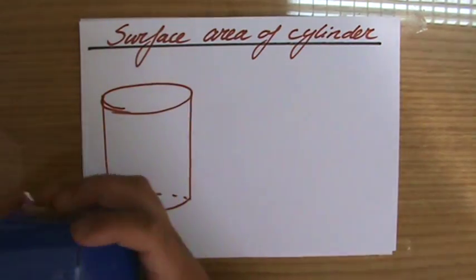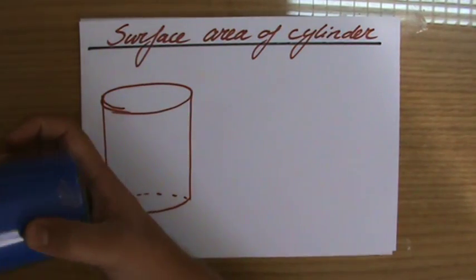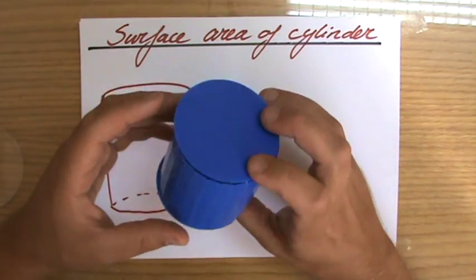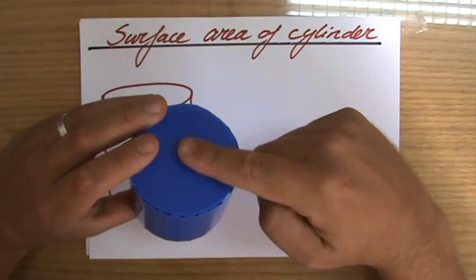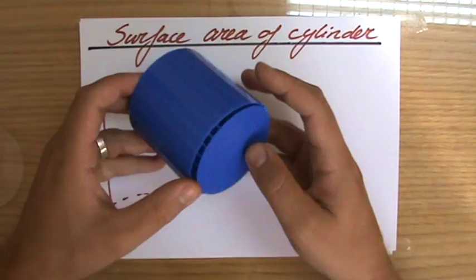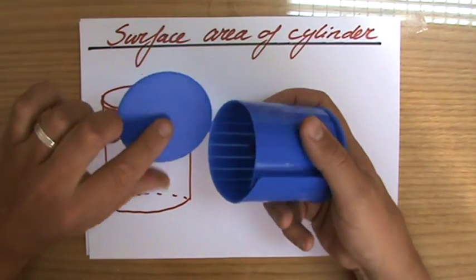I'm just going to take the inside out first. So what is at the surface of my cylinder? Well, let's start with these two. What kind of figures are they? They are circles.